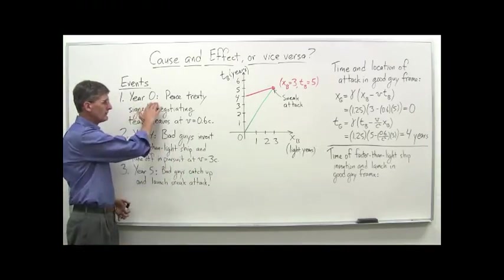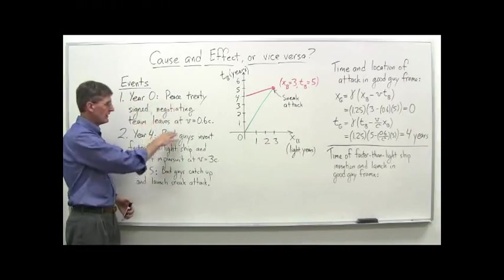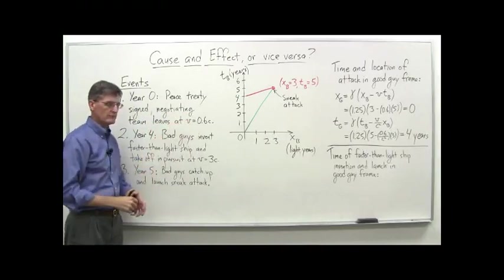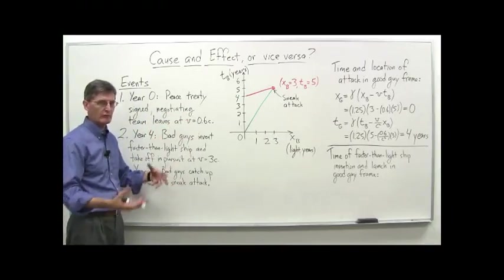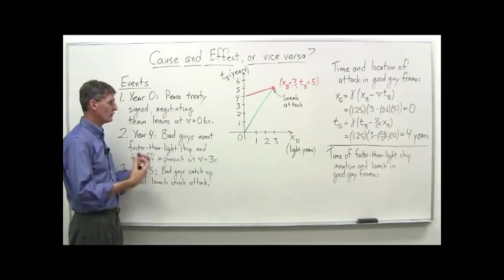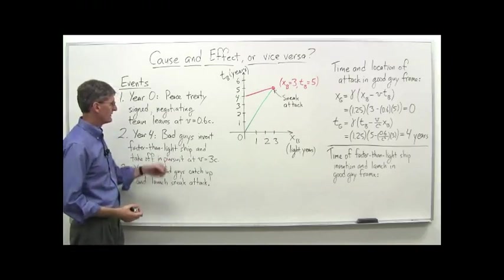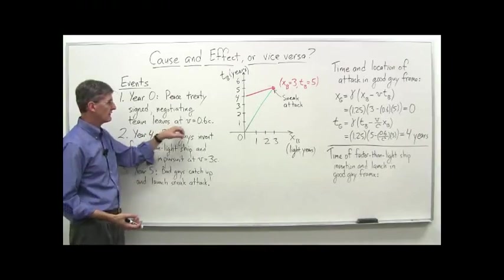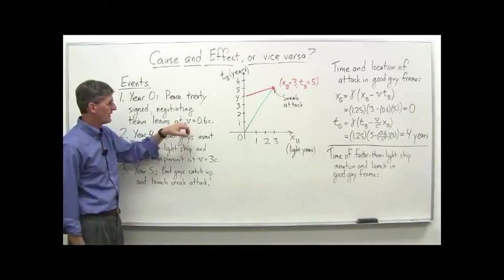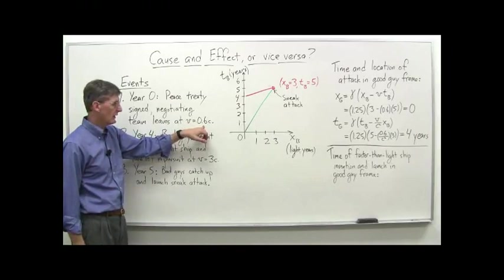So in year zero, there's a peace treaty signed, and the negotiating team for the good guys then leaves the home planet of the bad guys. So they actually went to the home planet of the bad guys and negotiated the peace treaty and got it all set and everything signed, and then they left in their ship to go back home at a velocity of 0.6 times the speed of light.